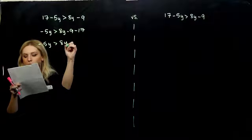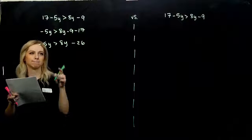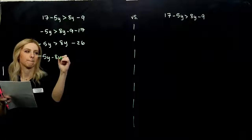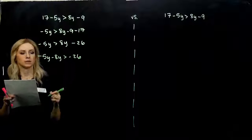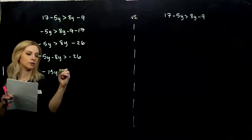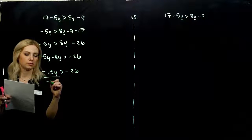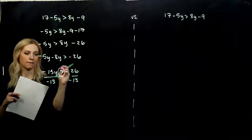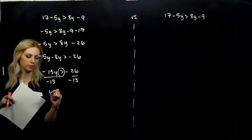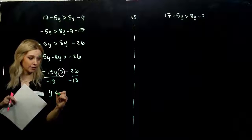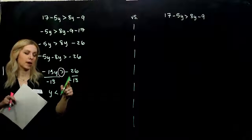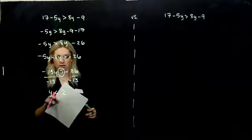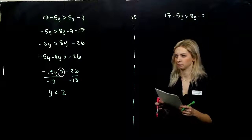Over on the right, we're looking at minus 26 as our constant. Trying to get the y's together, so I'm going to subtract 8y from both sides. Minus 13y is greater than minus 26. So divide by minus 13 — what has to happen? What do we have to remember? Flip the sign since we're dividing by negative. So y is less than — negative divided by negative gives us positive, and 13 goes into 26 two times — so y is less than 2 is our solution.